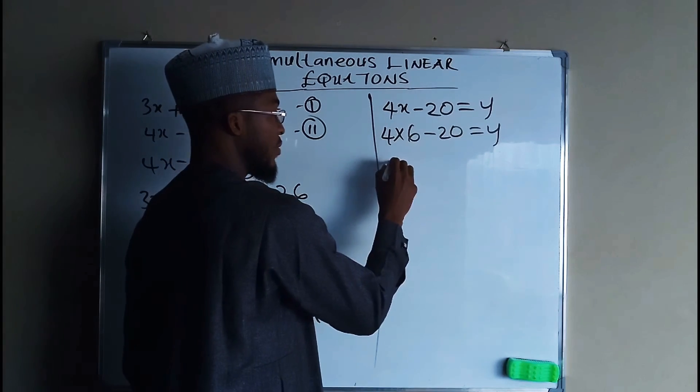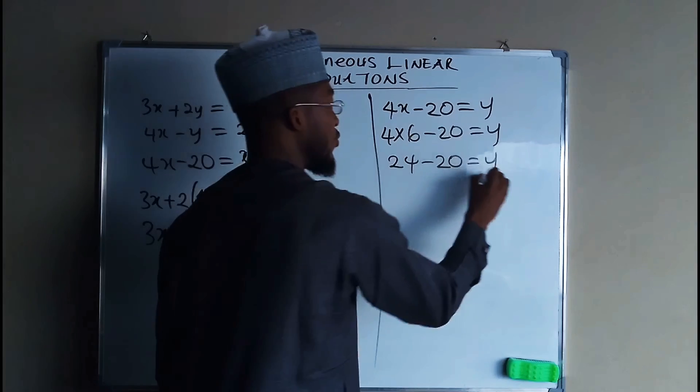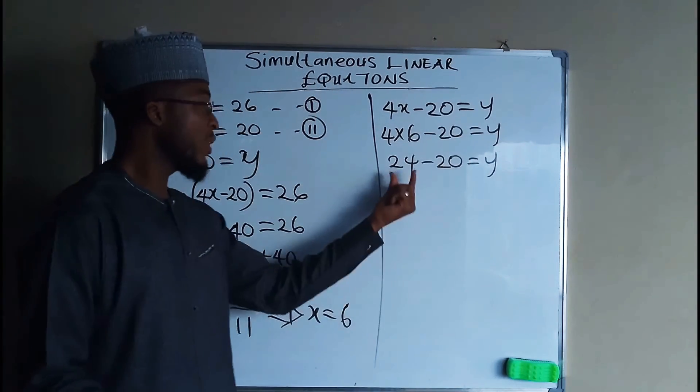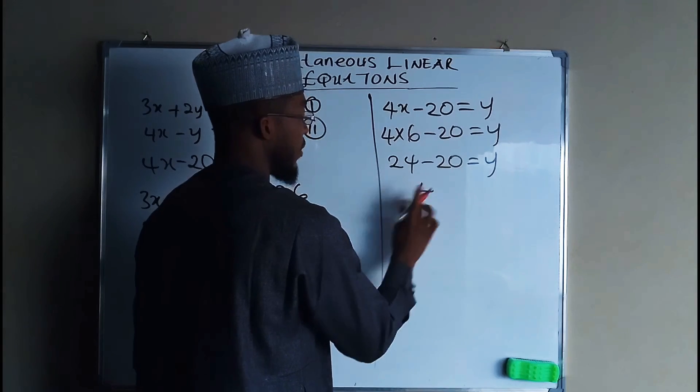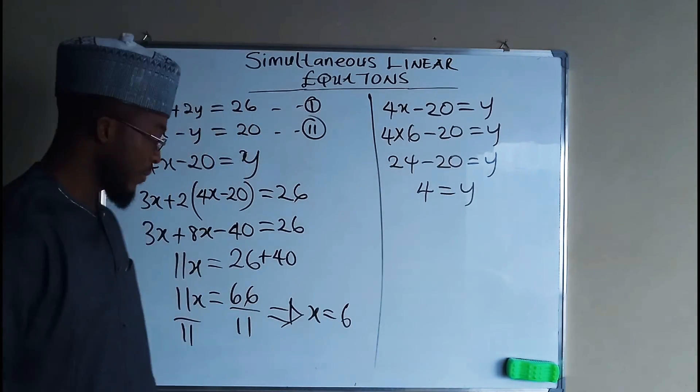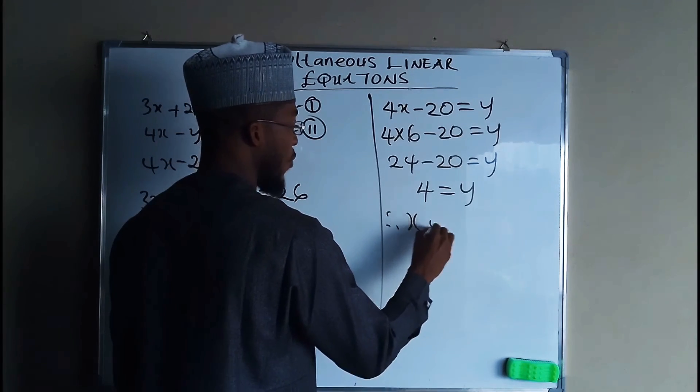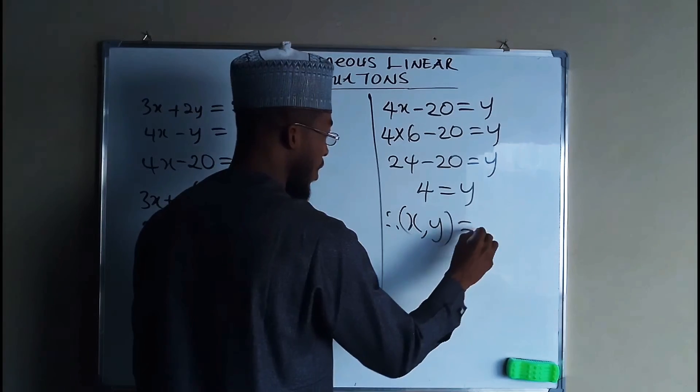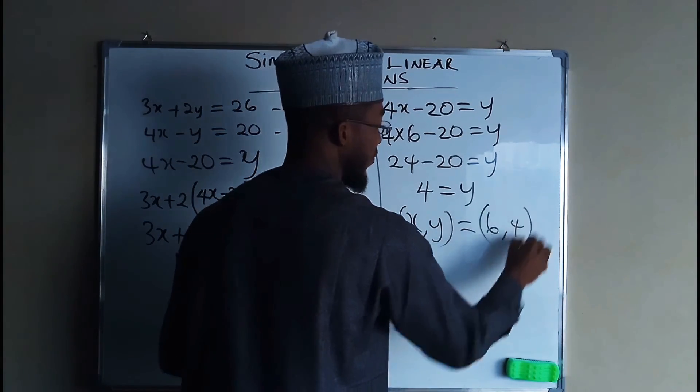4 times 6 is 24 minus 20. This is equal to y. But 24 minus 20 is equal to 4, so y equals 4. Therefore, the values of x and y are 6 and 4 respectively.